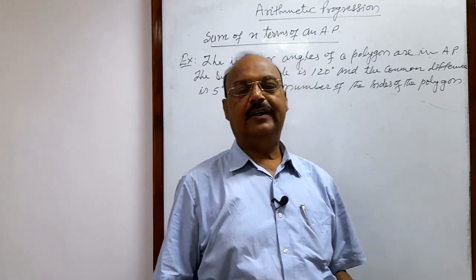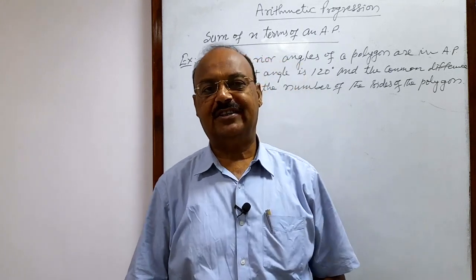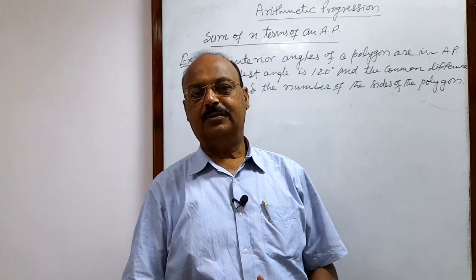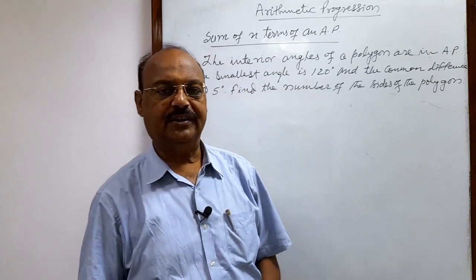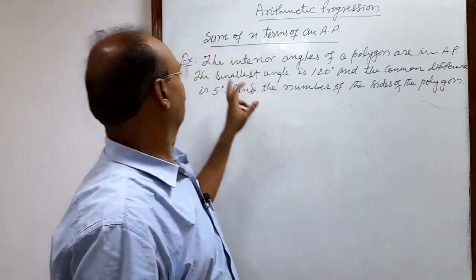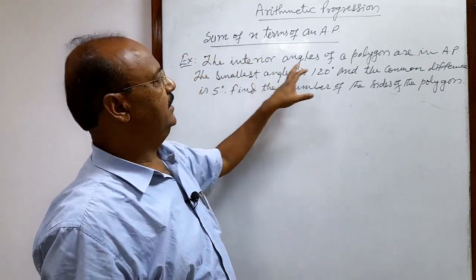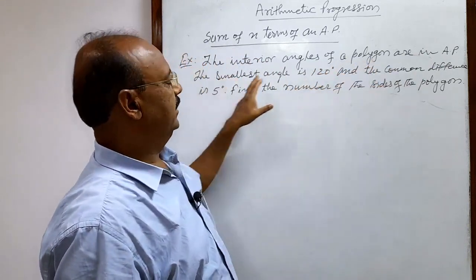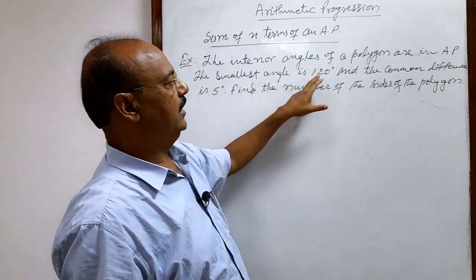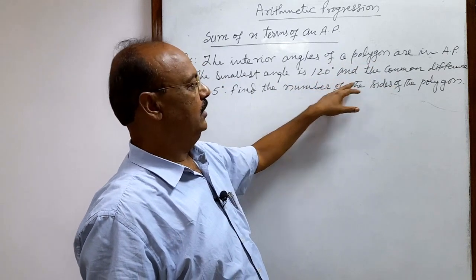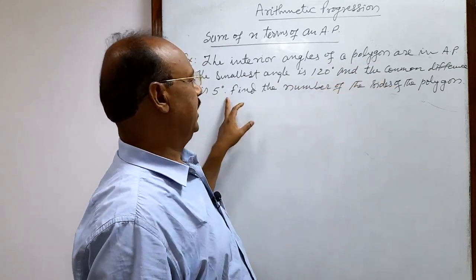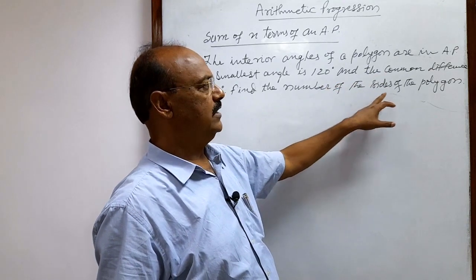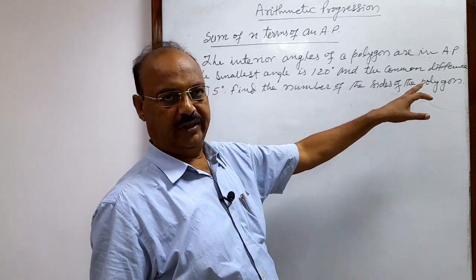Here let us see a very interesting question from the topic sum of n terms of arithmetic progression. The question is: the interior angles of a polygon are in AP. The smallest angle is 120 degrees and the common difference is 5 degrees. Find the number of sides of the polygon.